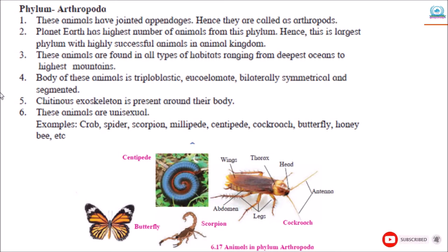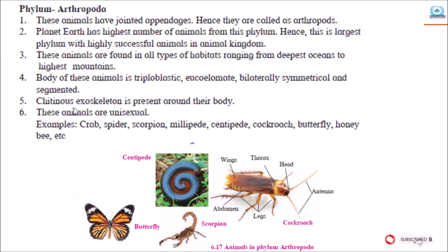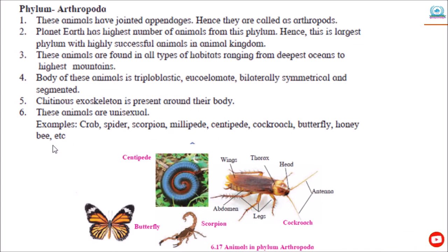The body of this animal is triploblastic, eucoelomate, bilaterally symmetrical, and segmented. A chitinous exoskeleton is present around their body, which is hard. These animals are unisexual. Examples: Crab, Spider, Scorpion, Millipedes, Centipedes, Cockroach, Butterfly, Honeybee, etc.